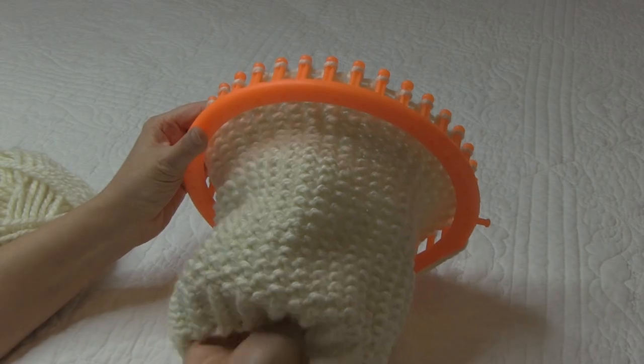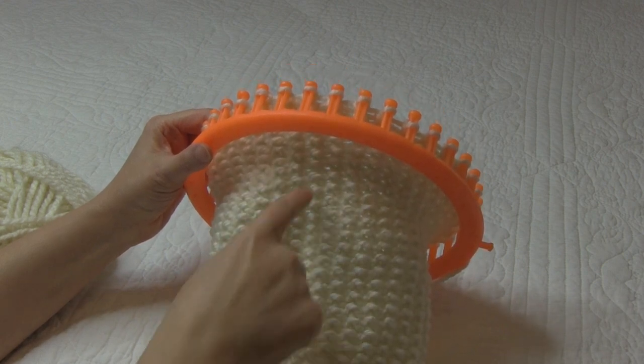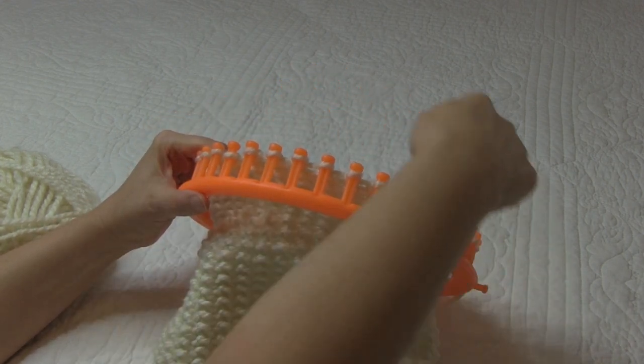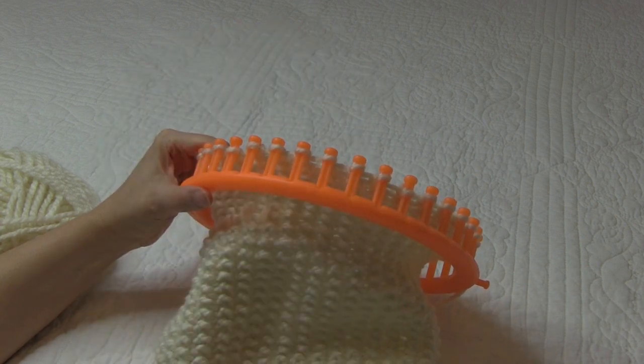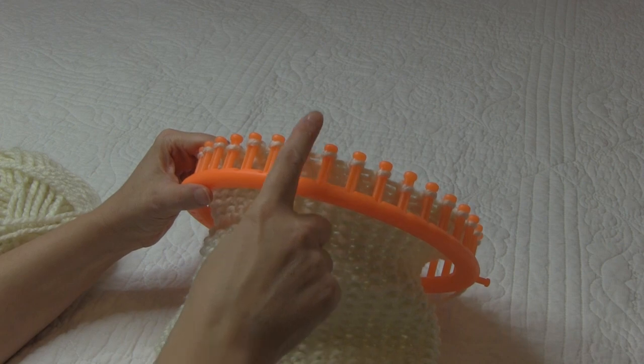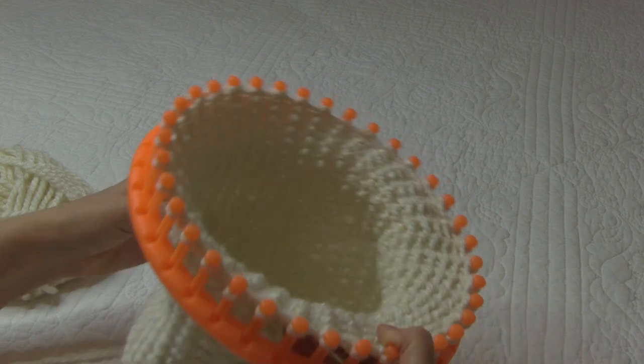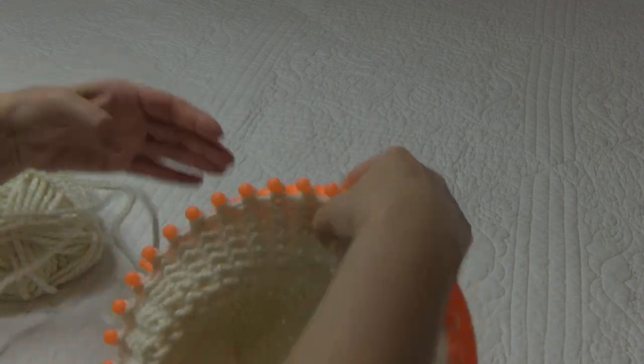I just finished up my seed stitch hat. Once I finished my pattern to the length I wanted, I went around one time and did one row of our e-wrap knit stitch. That way it helps our drawstring bind off a little bit better. So now I'm going to start my drawstring cast off.